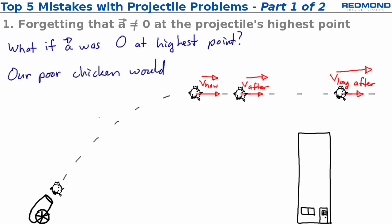Zero acceleration would mean constant velocity and the poor little raging chicken would just keep on going without ever falling back down to the ground.